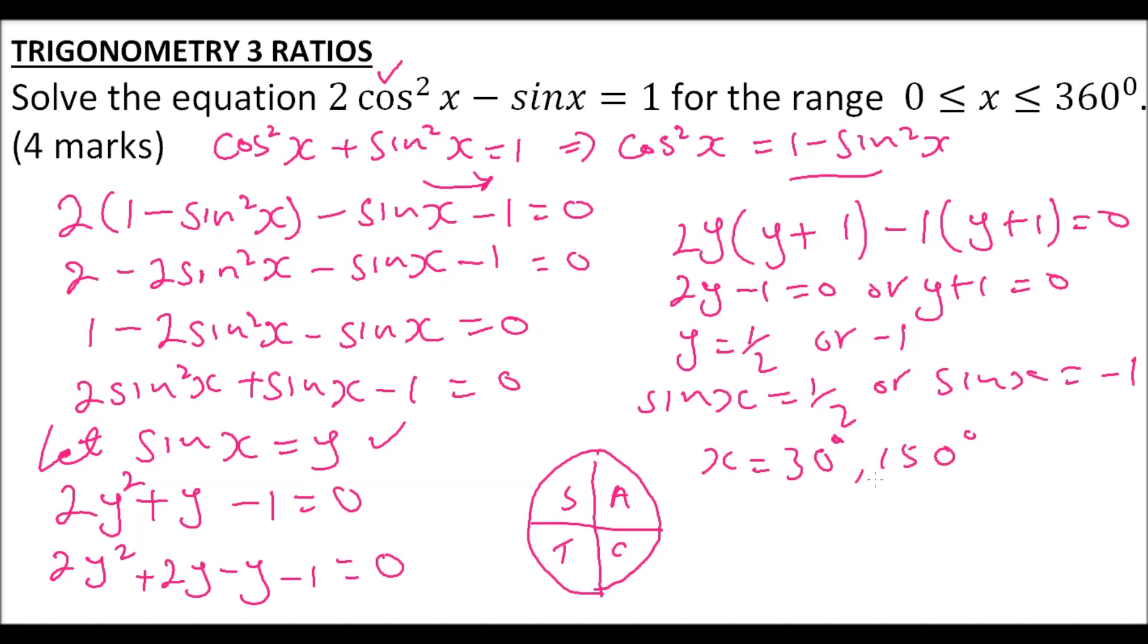We don't have any other angle between 0 and 360 whose sine equals 1/2. When sinx = -1, the angle is 270 degrees. These are the angles that satisfy our equation. I hope you have understood, and thank you for watching.